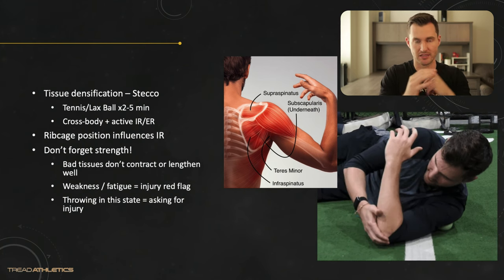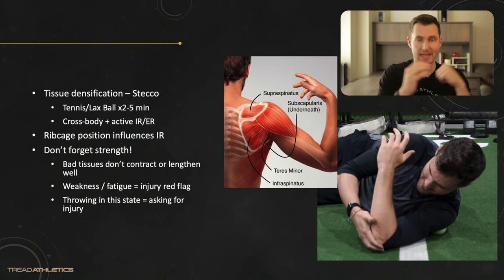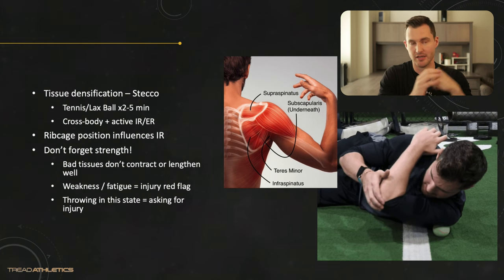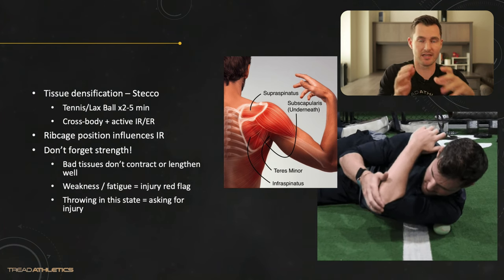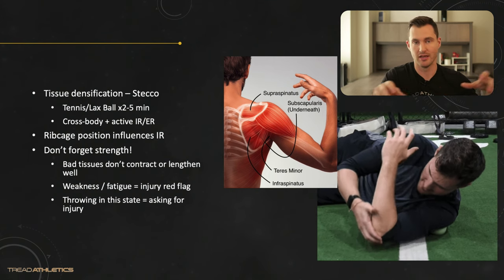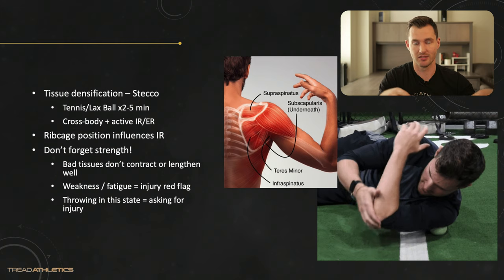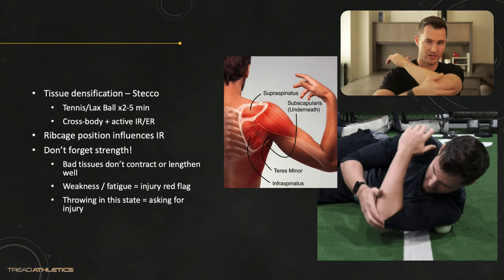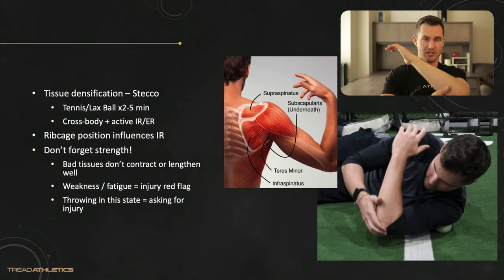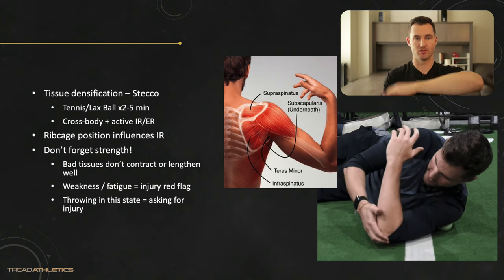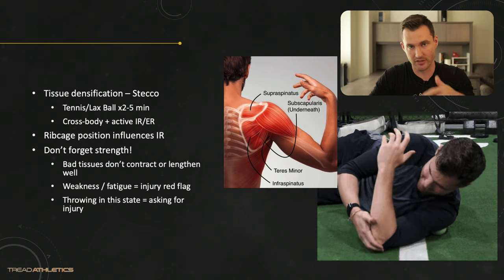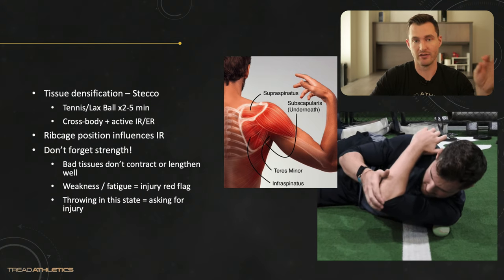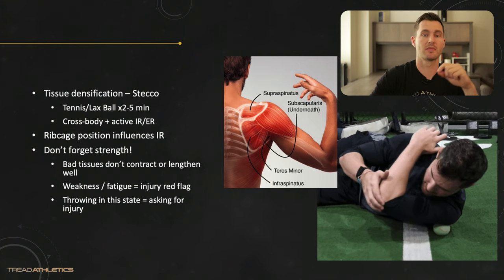Stay on that spot for somewhere between two to five minutes until you feel the pain sensitivity die down. If it starts at an 8 out of 10, a minute later it's a 7, then a 5, then a 3 — that's a sign you're actually hydrating the tissue and creating a neurological and actual tissue response. You can also add in a cross-body stretch or active release, and active rotation of the shoulder. That's a really good one to start regaining extensibility and proper tissue quality and hydration of that posterior capsule and posterior cuff.